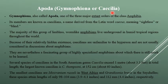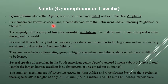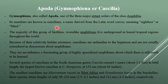Apoda, Gymnophiona, or Caecilia — Gymnophiona is also called Apoda, a group which has no limbs. Members of this group are called Caecilians, a name derived from the Latin 'caecus' meaning sightless or blind — referring to animals that are without eyes or are blind.